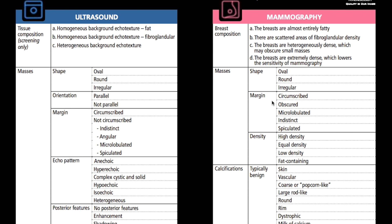When we talk about mass shape, we only have three keywords: oval, round, or irregular. When we talk about margin, we have circumscribed, obscured, microlobulated, indistinct, or spiculated.